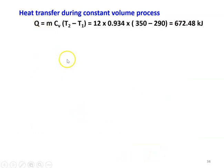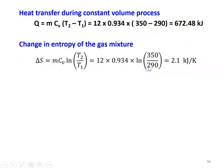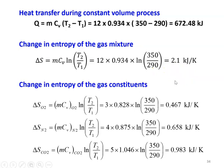Since it is a constant volume vessel, the heat transfer Q = M·CV·(T2 − T1) = 12 × 0.934 × (350 − 290) = 672.48 kJ. The change in entropy of the gas mixture: ΔS = M·CV·ln(T2/T1) = 12 × 0.934 × ln(350/290) = 2.1 kJ/K.